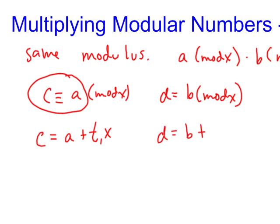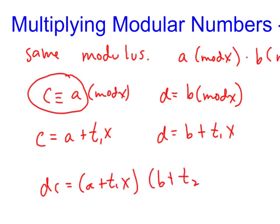Essentially what we're doing is we want to show that dc equals, if we multiply dc together, that means we're going to have a plus t1 x times b plus t2 x. If we multiply that out, you get ab, and then you're going to have a bunch of these that have x's in them. You're going to have b t1 x plus a t2 x plus t1 t2 x squared.